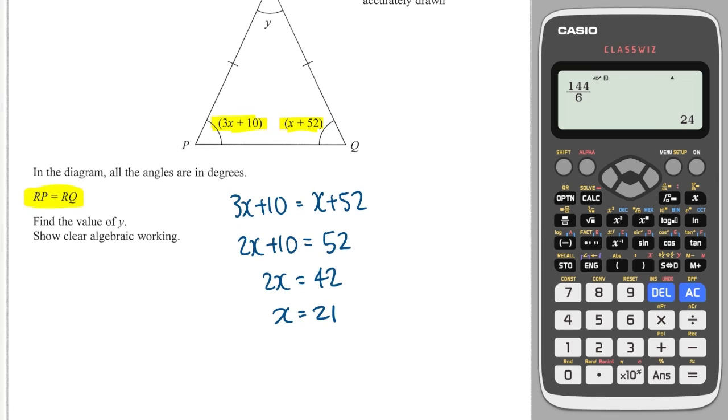I can now work out the value of each of these angles. Because 3x plus 10 is now equal to 3 times by, we know what x is, 21 plus 10. So we would do 3 times 21 plus 10, and that would be 73. I'll just double check that this one is also 73. So that is x plus 52, and they're both 73 as we had hoped. So y is equal to 180 minus 73 minus 73, because y is what's left over in the triangle, and the triangle must add up to 180. So it's 180 minus 73 minus 73, and we get 34.